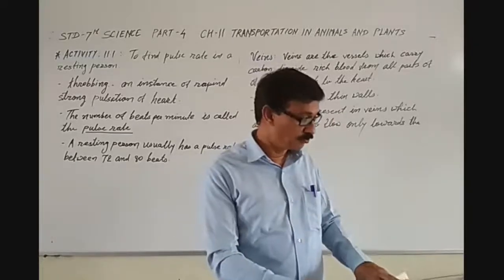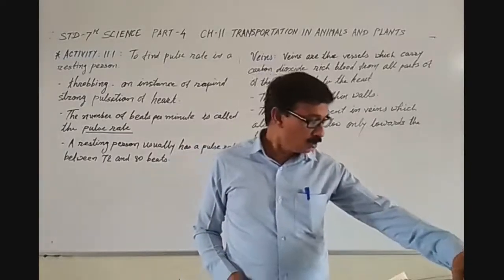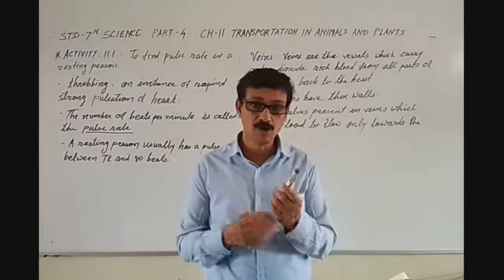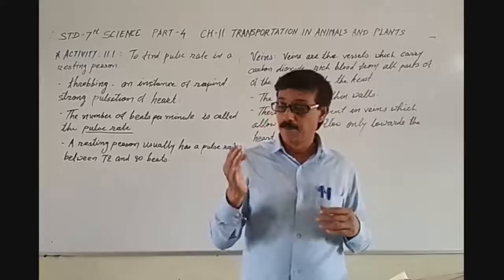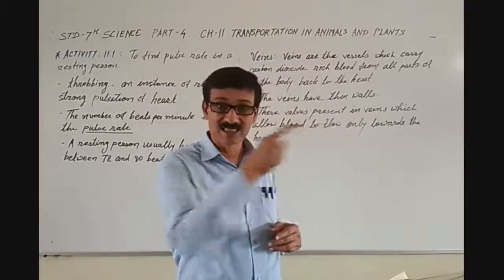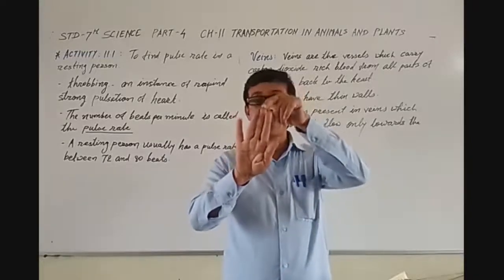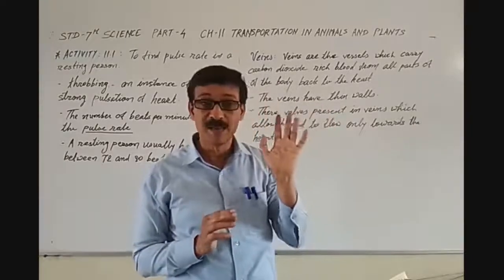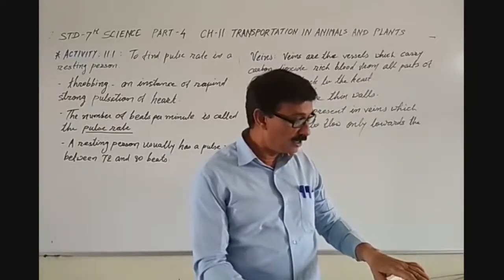Open your textbook to page number 122. Place the middle and index fingers of your right hand on the inner side of your left wrist. This is my right hand and this is my left hand. The index finger is the one we use to point at somebody, and the middle finger is the one in the middle of the five fingers.